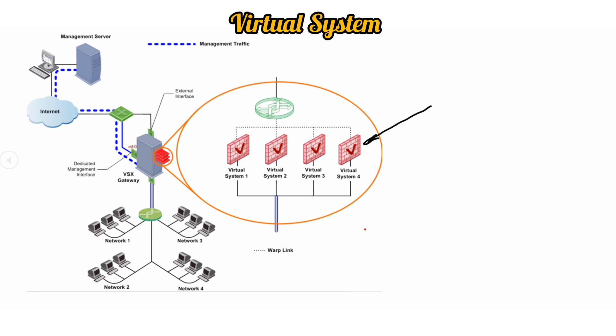That is the purpose of the VSX gateway and you can use all these virtual systems for different customers. Consider virtual system 1 is used for network 3, virtual system 2 for network 4, virtual system 3 for network 2, and virtual system 4 for network 1. Basically these virtual systems are protecting separate networks, and this virtual system individually handles all the firewalling work.